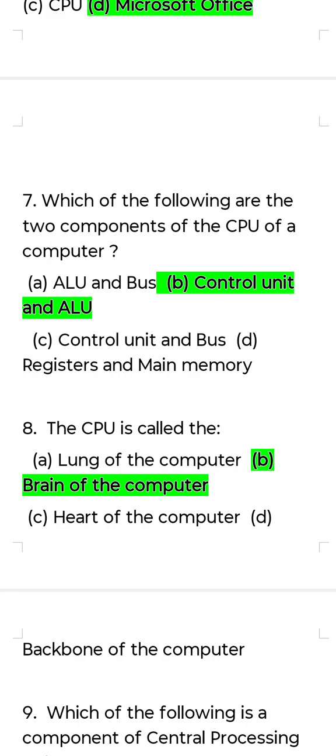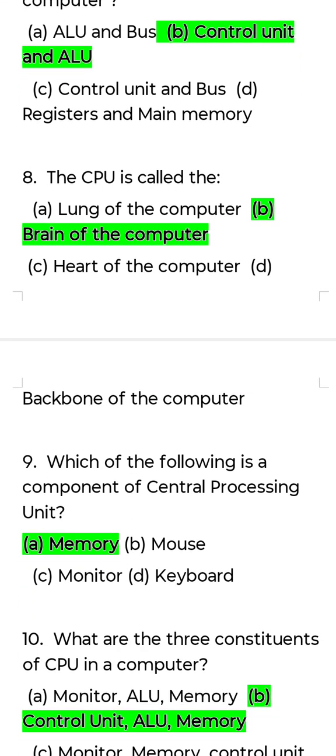Seventh question: Which of the following are the two components of the CPU of a computer? Answer: Control Unit and ALU.